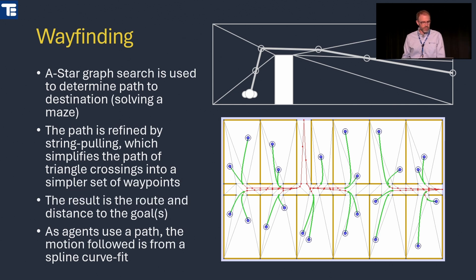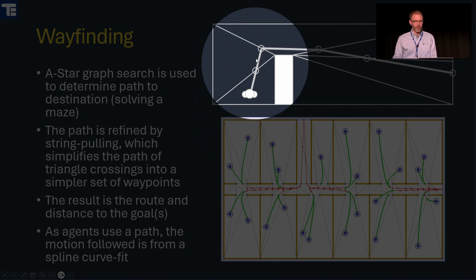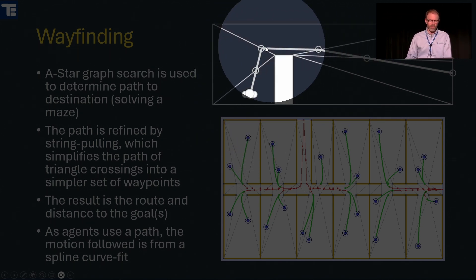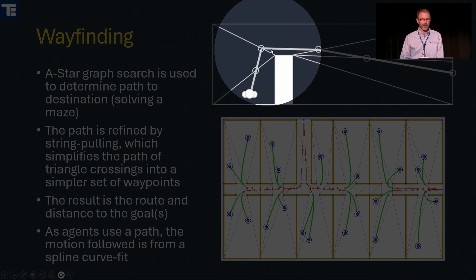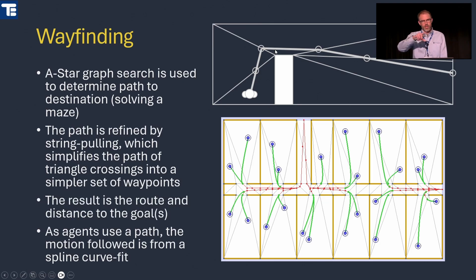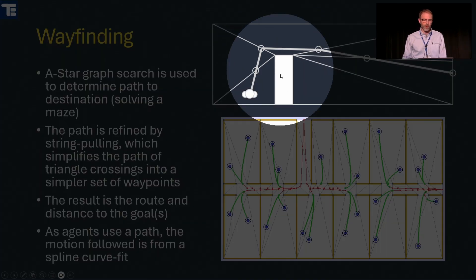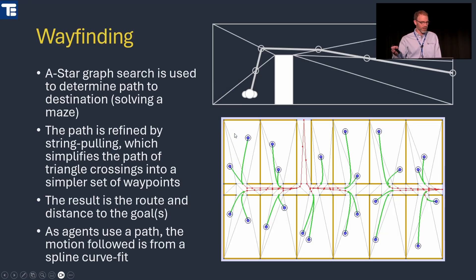We additionally refine paths with curve fits. Rather than occupants being tight to corners, we project a cylinder or sphere moving through to the exit to generate intermediate waypoints, then fit those with splines so the actual movement looks more natural.